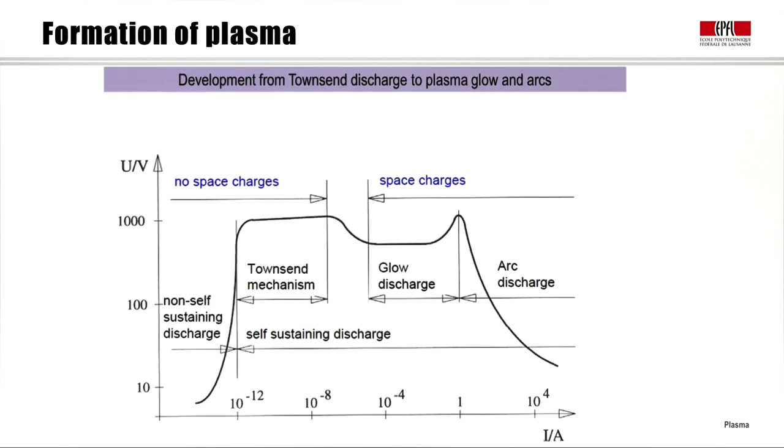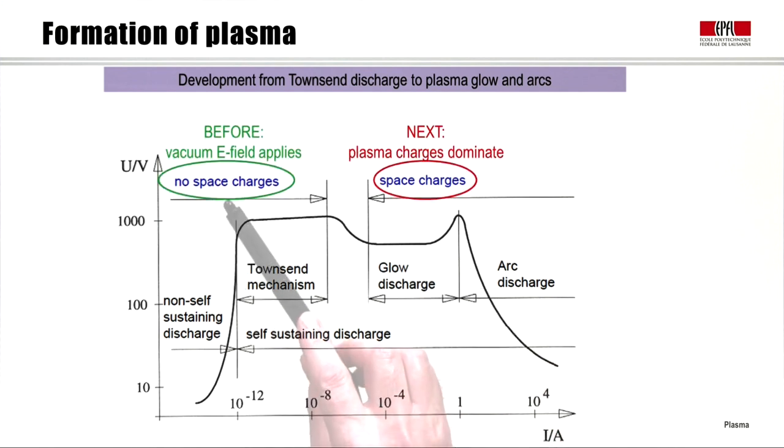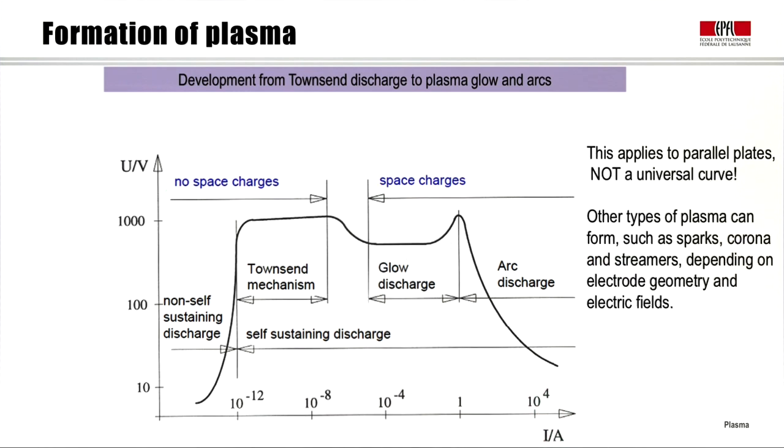This is the same voltage current graph presented in a different orientation, with current along the x-axis and voltage on the vertical axis. This is the Townsend region, this is the glow discharge and arc region. The vacuum field applies here and Poisson's equation applies here. Note that this curve applies to parallel plates, it's not universal because other types of plasmas can form such as sparks, coronas and streamers depending on electrode geometry.